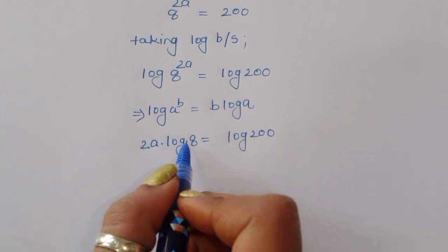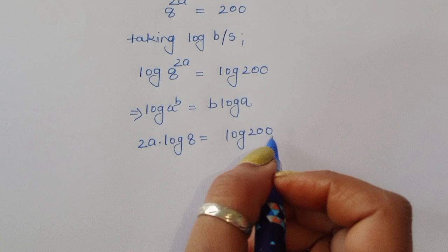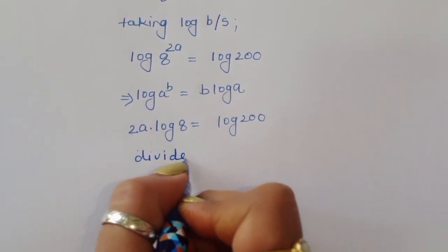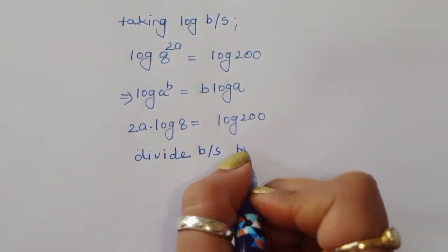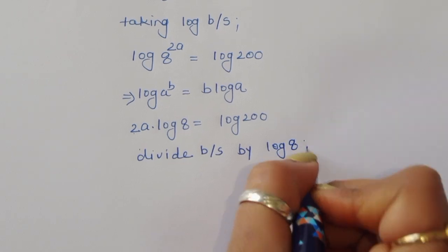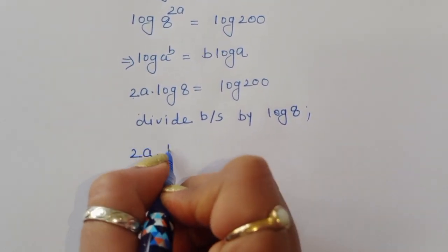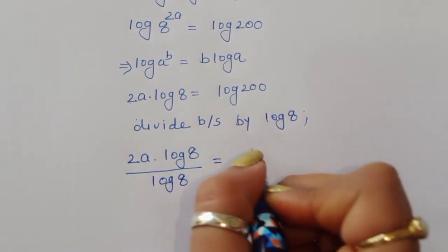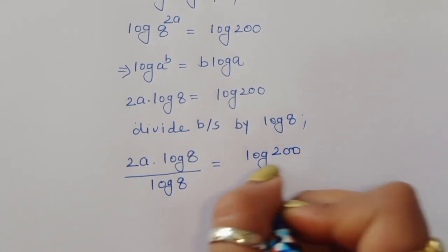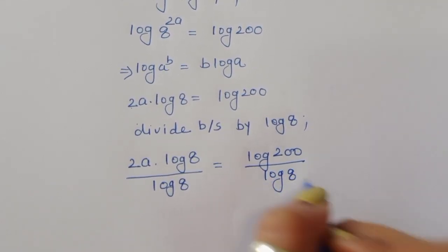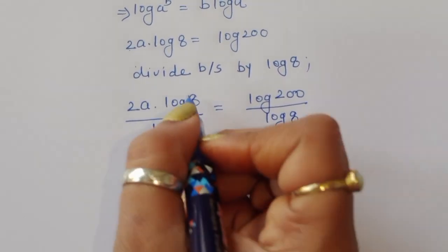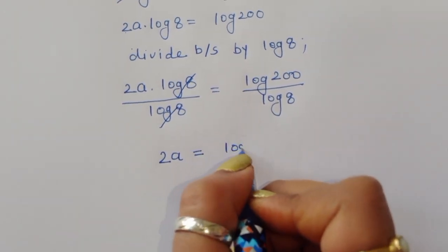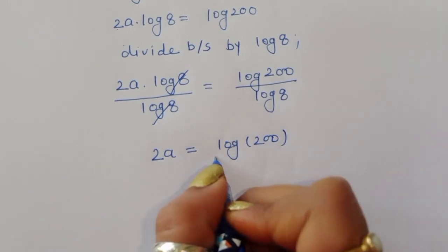Now we need to cancel log of 8. So we divide both sides by log of 8. Then log of 8 divided by log of 8 cancels, and on the left we have 2a equals log of 200 divided by log of 8.